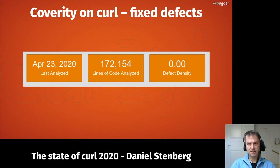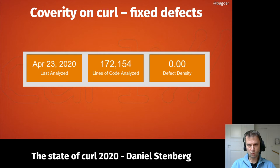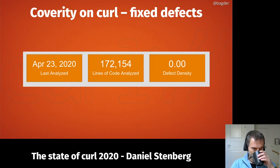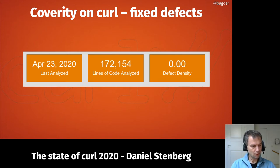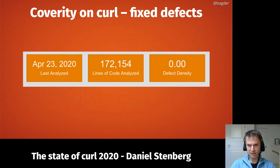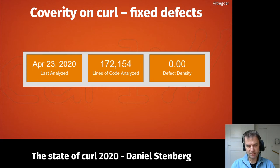For example, we use Coverity, which I would say is the state-of-the-art static analyzer for C code. Here's one of the recent runs I did on curl: it found nothing — zero defects detected across 172,000 lines of code. I run Coverity every now and then to make sure we stick to this standard. Every now and then it finds something suspicious and we fix it. If I do my job right, we never release anything with a defect Coverity can find.